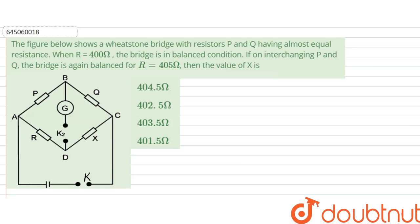Hello, we are given a question. The figure below shows a Wheatstone bridge with resistors P and Q having almost equal resistance when R is equal to 400 ohm. The bridge is in balanced condition.